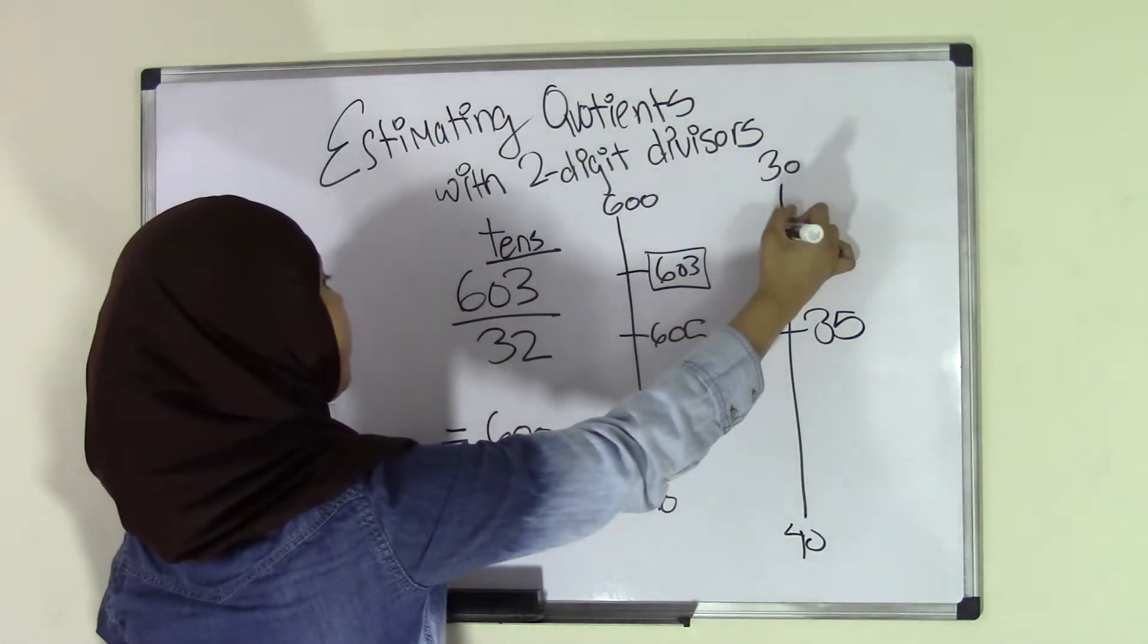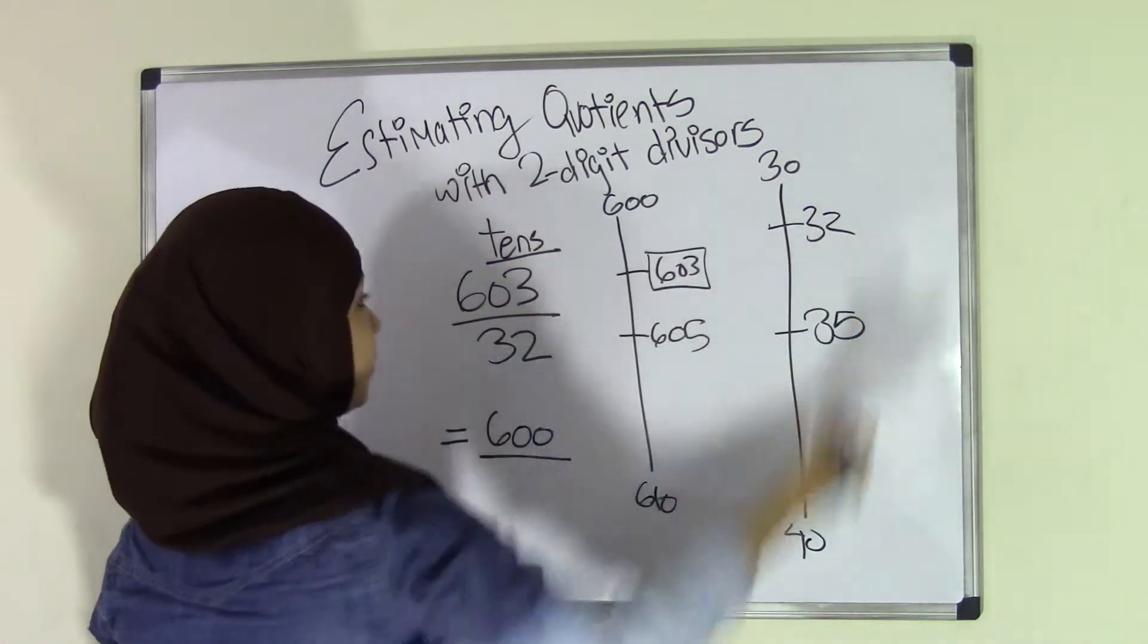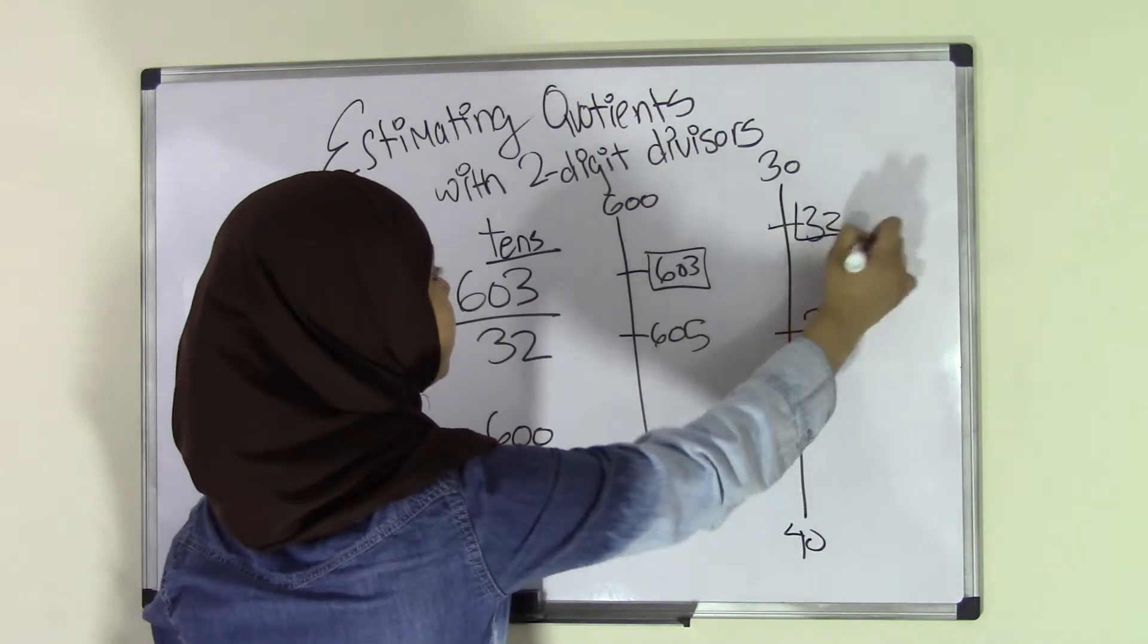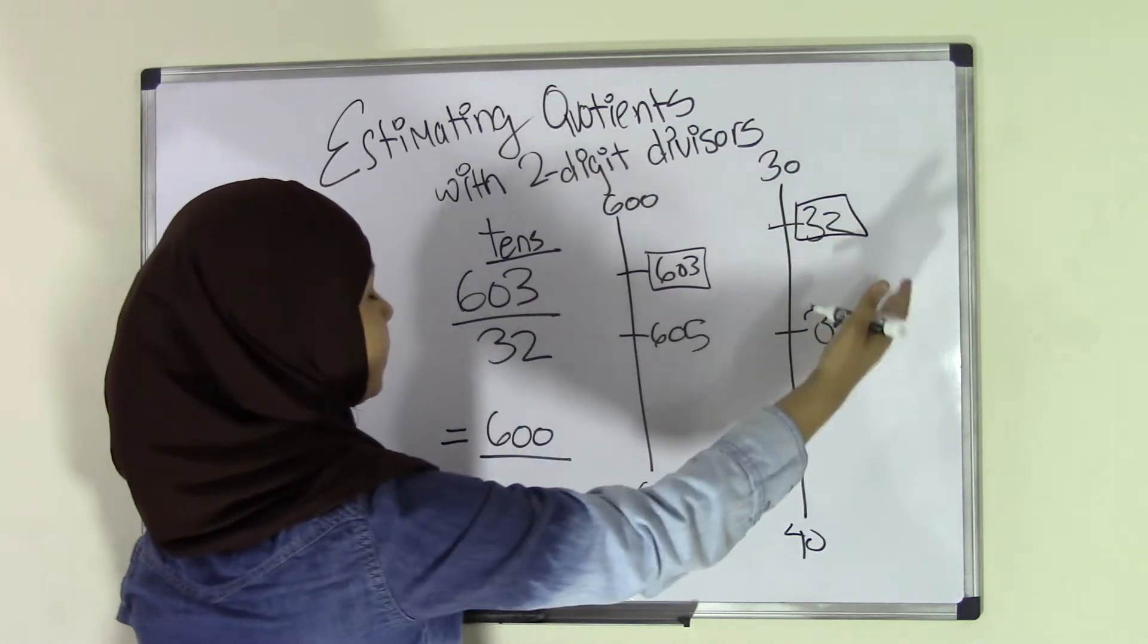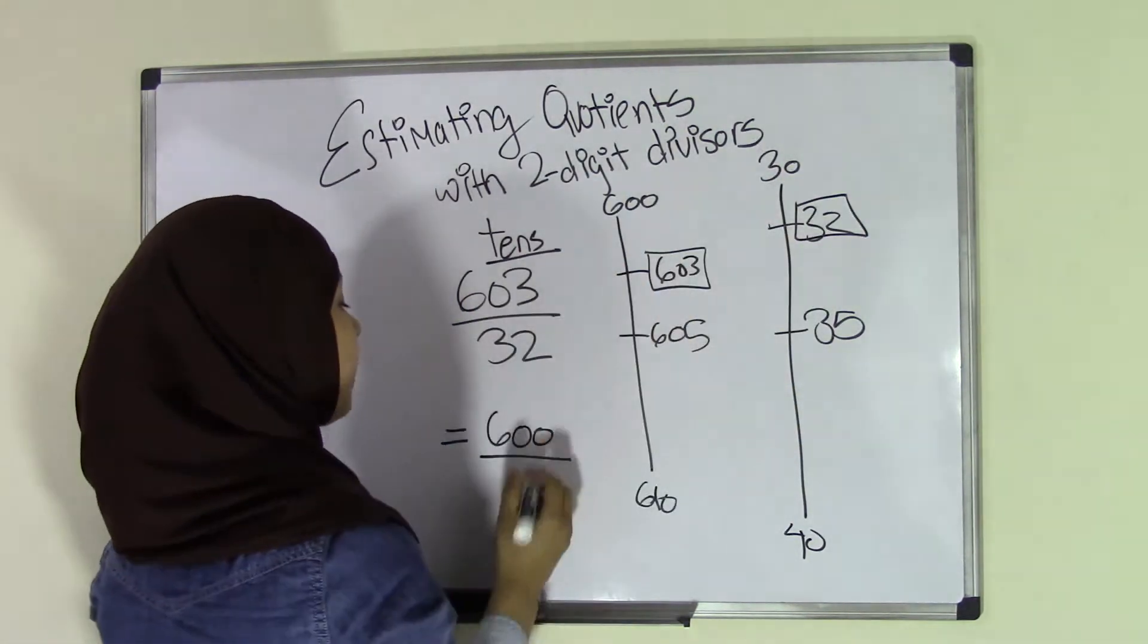32 is going to be placed about up here. So 32, right? Now, 32 is closer to 30 according to the number line, so that means 32 would be rounded off to 30.